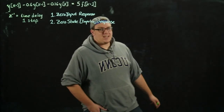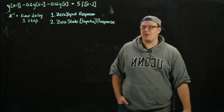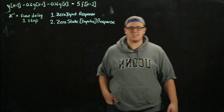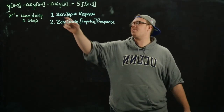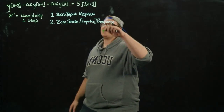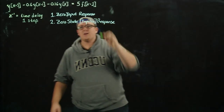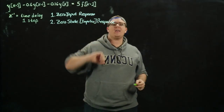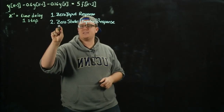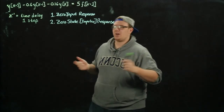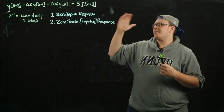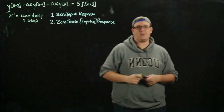Hey guys, this is Andrew with HKN, and today we're going to be looking at a difference equation that explains a discrete system. Specifically, we're interested in finding the zero input response, which is when our input f of k is zero for all time, and the zero state response, also called the impulse response, which can fully characterize any LTI discrete or continuous system.